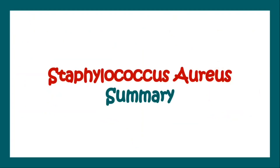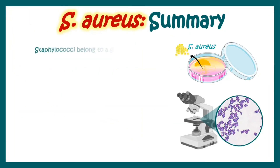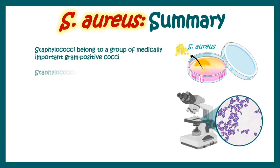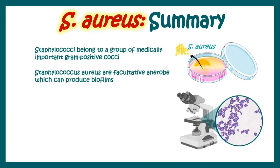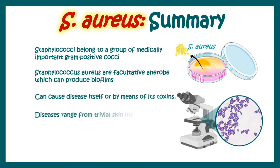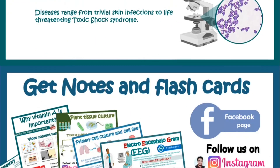In summary, Staphylococcus aureus belongs to a group of medically important gram-positive cocci. It is facultative anaerobic and can produce biofilms. It can cause disease itself or by means of its toxins, and diseases range from trivial skin infections to life-threatening toxic shock syndrome.